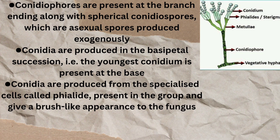Conidia are present. Conidia are produced in a basipetal manner. You can see in the diagram that the top conidium is the oldest. In the basipetal manner, the younger conidium grows from the base and pushes the older one upward.